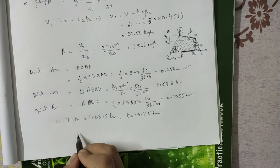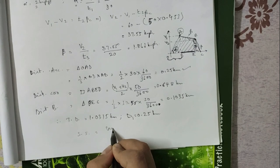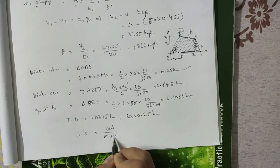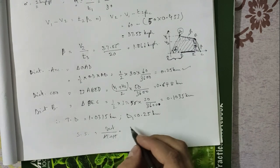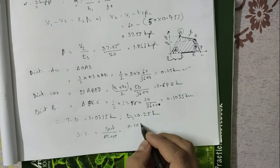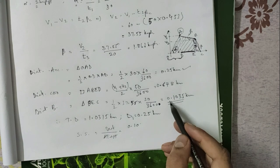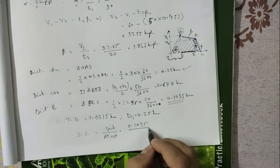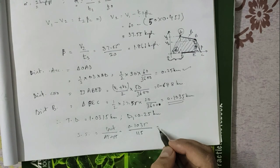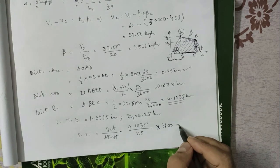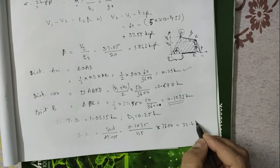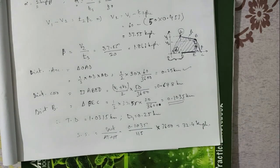Now we can find schedule speed. Schedule speed = distance / (actual time + stopping time) = 1.0315 / (100 + 15) seconds = 1.0315 / 115 seconds. Converting to kmph by multiplying by 3600 gives schedule speed = 32.3 kmph, approximately 32.4 kmph.